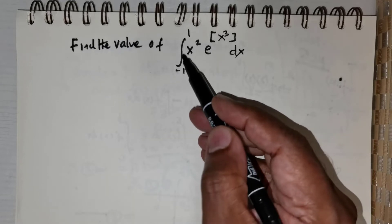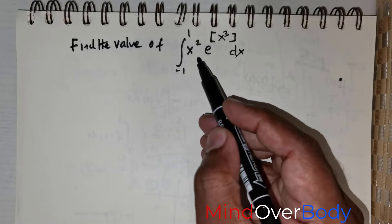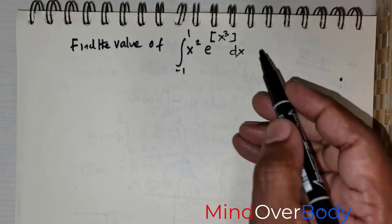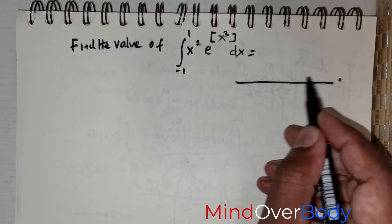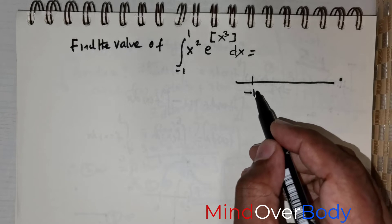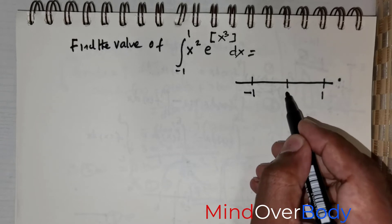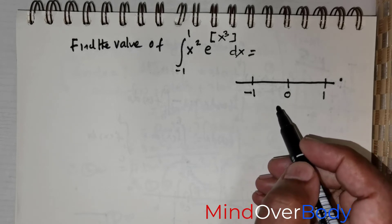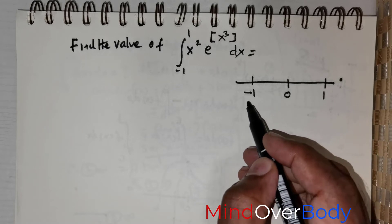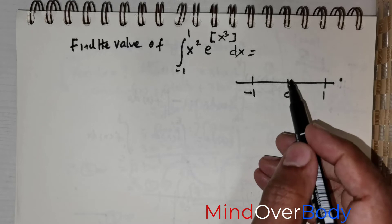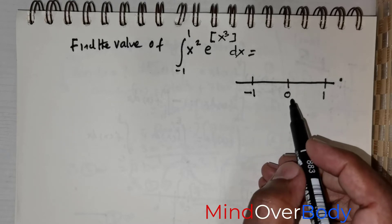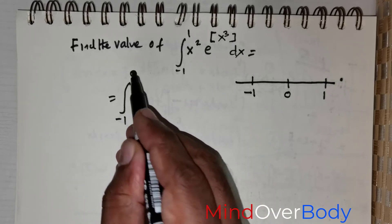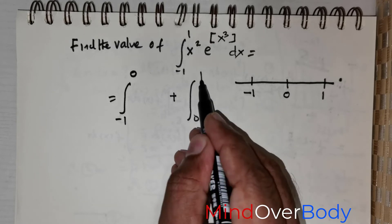We are expected to find the value of the integral from negative 1 to 1 of x squared times e raised to the power of the greatest integer function of x cubed, dx. Considering the greatest integer function over the interval negative 1 to 1, it will be discontinuous at all integer values. So the interval must be split into negative 1 to 0 and 0 to positive 1.